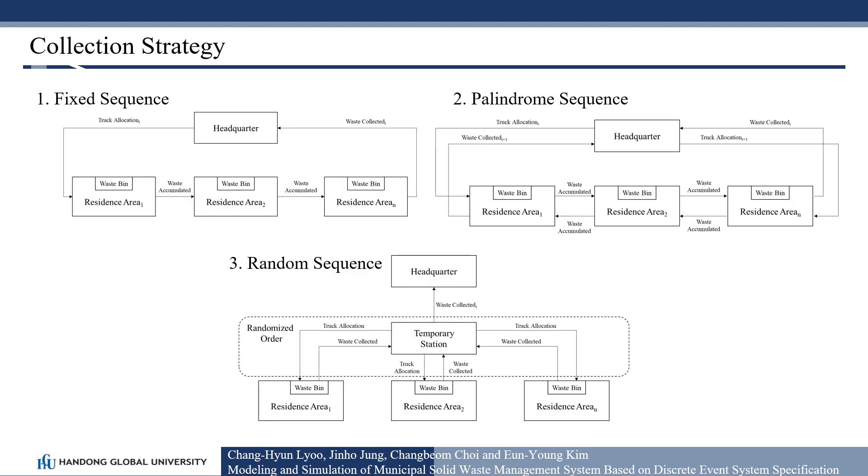First is a fixed sequence. Second, a palindrome sequence. Third, a random sequence. A fixed sequence is a sequence in which the garbage truck visits the buildings in a predefined order. A palindrome sequence is a sequence in which the order is reversed after the completion of each cycle of collection. Finally, a random sequence is a sequence in which every building is visited in a random order.